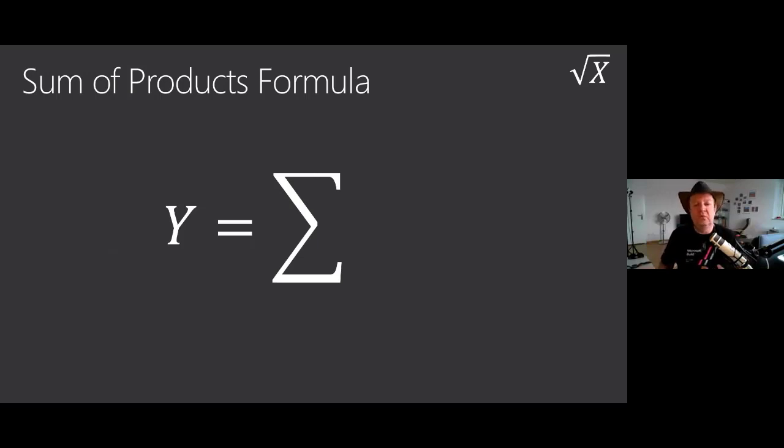For us programmers, we do that all the time - we do what we call a loop, going from 1 to N. For non-programmers, it's easy to imagine: we start with X1 times W1, then add X2 times W2, then add X3 times W3, and go all the way to XN times WN.